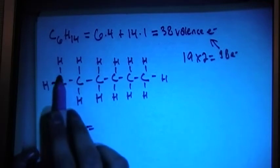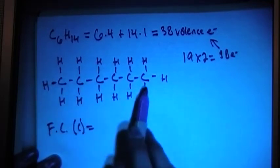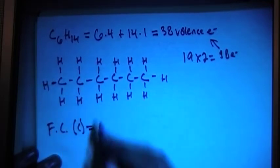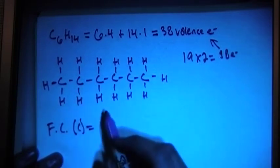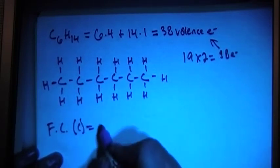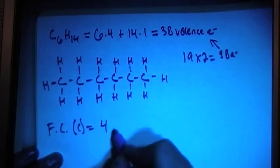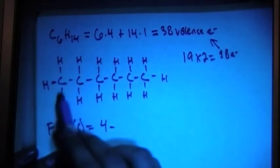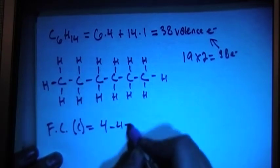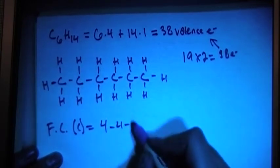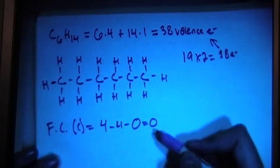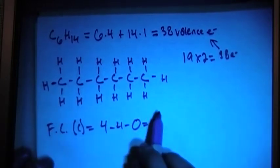Alright, so now we can go ahead and check the formal charges, just to see that they're all going to work out nicely. Each carbon has the same setup. They all have 4 bonds around them, so this formal charge is going to apply to every carbon in this Lewis structure here. So, formal charge is valence brought in, which is 4 valence for each carbon, minus number of bonds, 1, 2, 3, 4, 4 bonds, minus number of non-bonding electrons, and there's none of those. They're all bonding, so it's going to be zero. So each formal charge for each carbon is going to be zero.